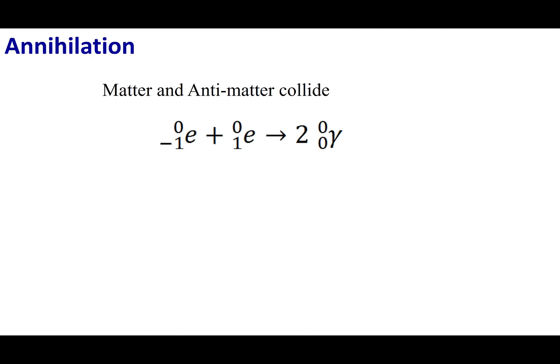Science enthusiasts love matter-antimatter reactions. If you take a beta particle — a high-energy electron — and combine it with a positron, an anti-electron, you get an annihilation reaction. When matter and antimatter collide, they cancel each other out and release pure energy. Both the atomic number and mass number become zero, and what's released is gamma radiation — high-energy electromagnetic radiation. This is formally taking matter and converting it into pure energy.